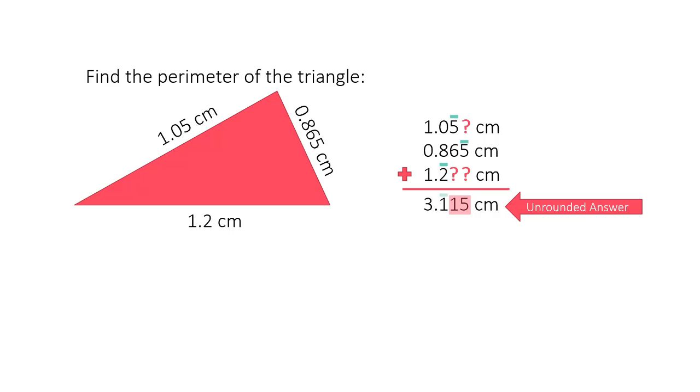This means that I should round my answer to only have one decimal place as well. The first decimal place in our unrounded answer is a one. Next to it is another one. So according to the rules of rounding, the one in the first decimal place will stay a one. We can now report the rounded answer as 3.1 centimeters rounded for correct significant figures.